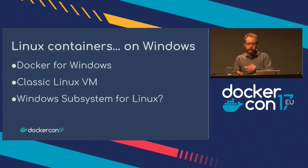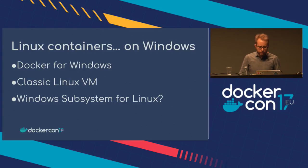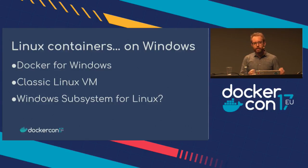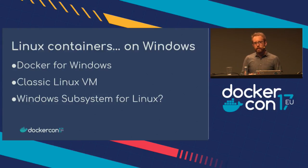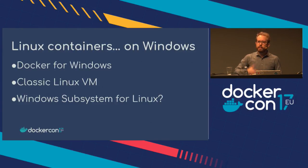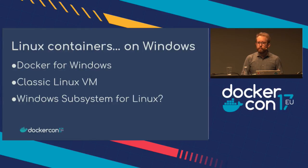We've gotten a lot of questions about whether we should support running Docker directly in the Windows subsystem for Linux, because we've implemented the Linux syscall ABI and Docker is a Linux application. Actually, with the latest insider builds it is possible. But WSL is really intended as a mechanism to run Linux developer tools on Windows for scripting and basic automation — not really for production. It also has rough edges around networking, IP tables, and file system performance that need to be addressed before it's ready for Docker workloads.